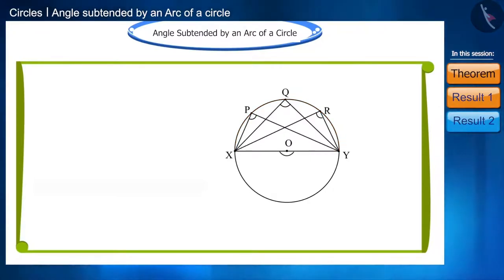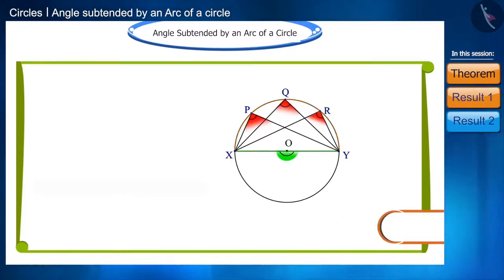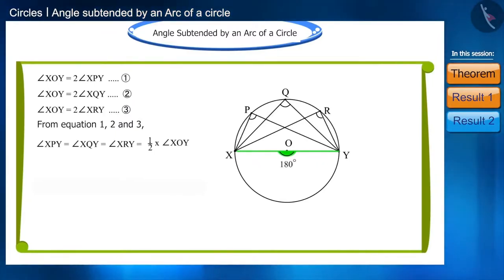And we saw the angle subtended from arc XY to the center, that is, angle XOY is twice the angle subtended to any point in the remaining part of the circle. We can write these angles as such. And the angle XOY is the straight angle, so it will measure 180 degrees. Therefore, the measurement of all these angles will be 90 degrees.